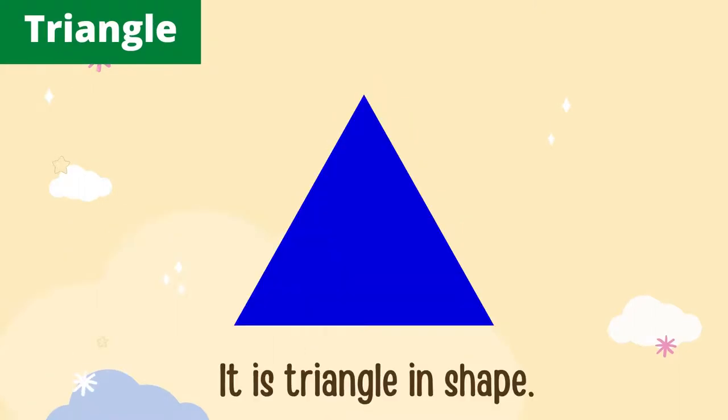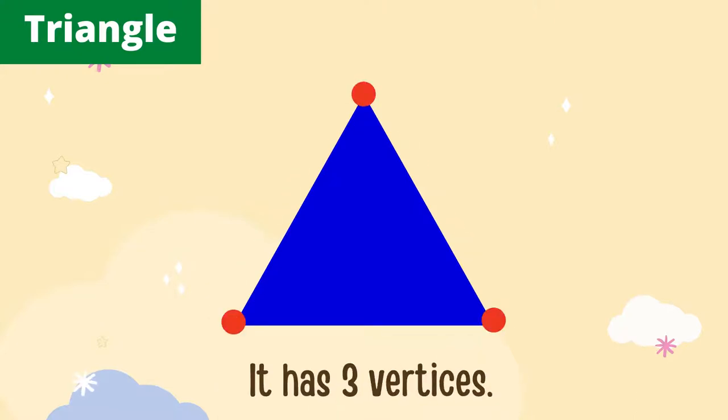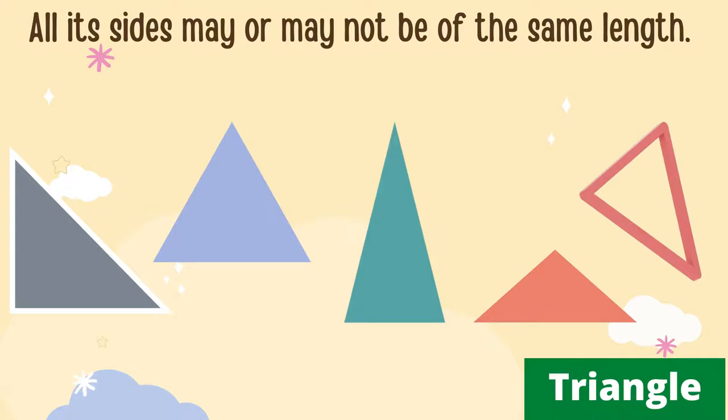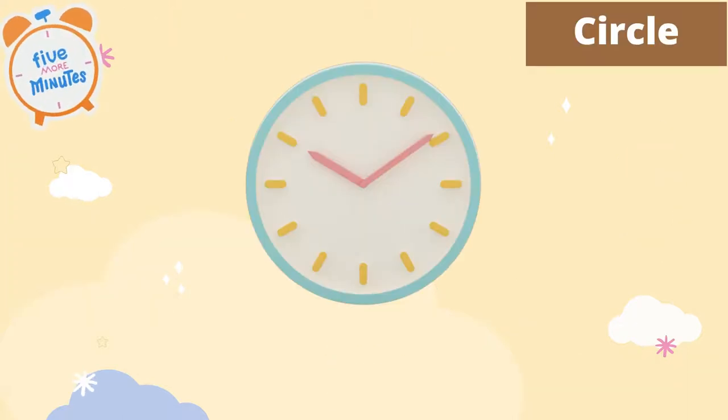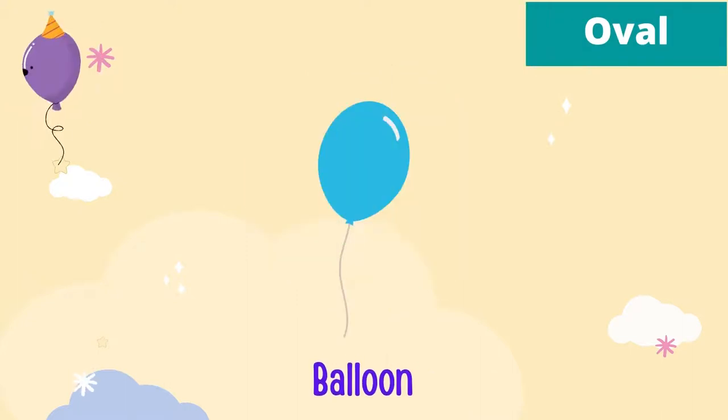It is triangle in shape. A triangle has three sides and three vertices. All its sides may or may not be of the same length. Here is a clock. It is circle in shape. And look at this balloon—it is oval in shape.